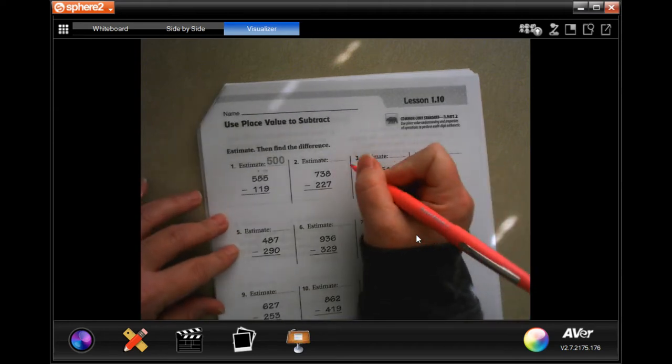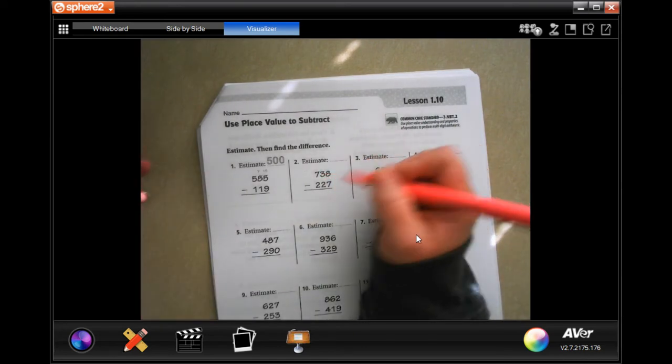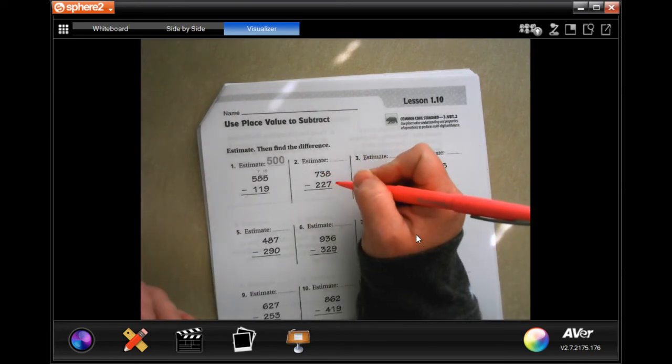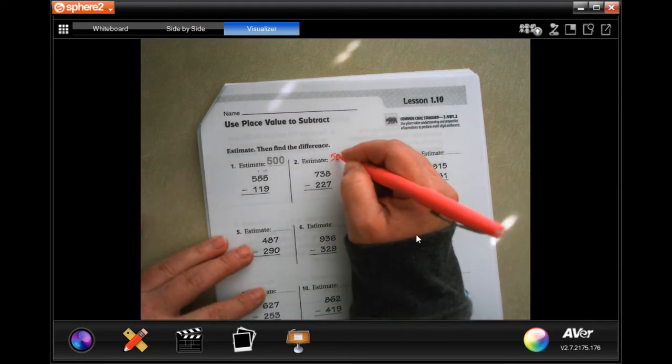So first we're going to estimate. 738 would round to about 700 and 227 would round to about 200. So 700 minus 200 is 500.